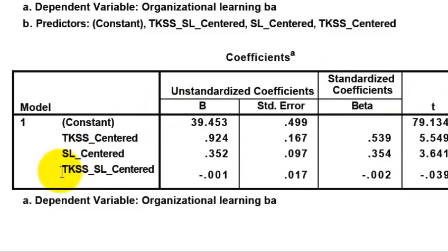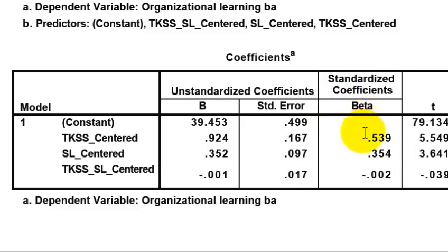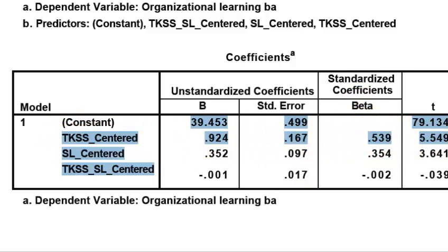And your last one — your TKSS SL centered — is not significant. The beta weight is practically zero, meaning when one changes, the other one doesn't. So what you're calling a mediator would probably have to be the one with the largest beta weight — that is your strongest IV.